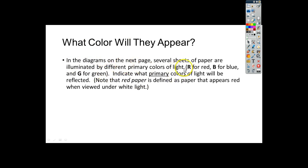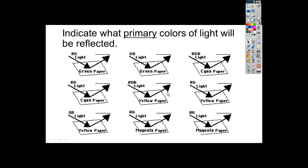You have different colors of paper illuminated by different colors of light. These are primary lights — red, blue, and green — and they use R, B, and G for each one. They want to know what primary colors of light will be reflected. Note that red paper is defined as paper that appears red when viewed under white light. So these papers' colors are what they look like when illuminated under white light normally.